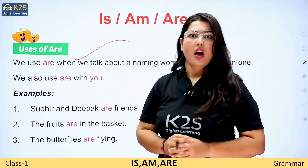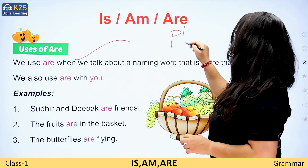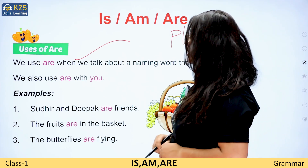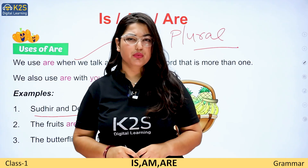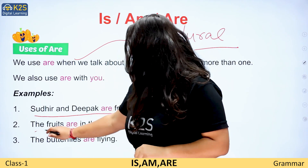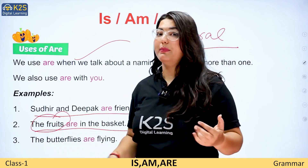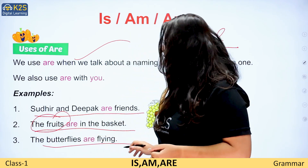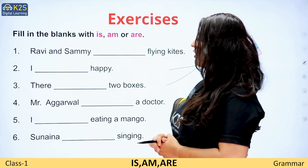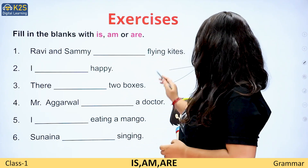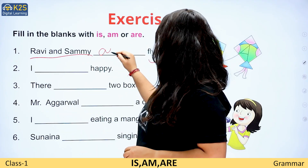Use of 'are' — we use it with plural subjects. For example: Sudhir and Deepak are friends, because we are talking about two nouns. The fruits are in the basket — multiple fruits. The butterflies are flying. Ravi and Sammy are flying kites, because Ravi and Sammy are plural, so we use 'are'.